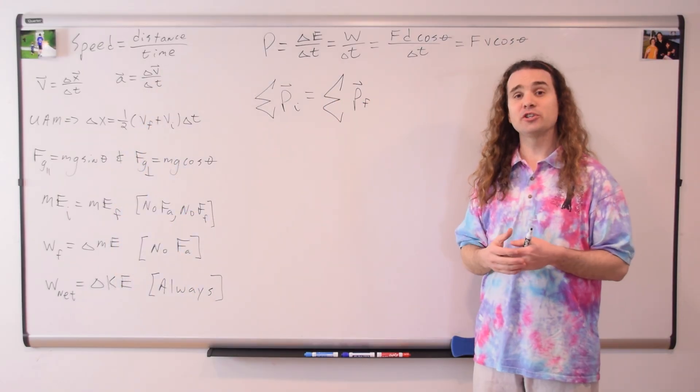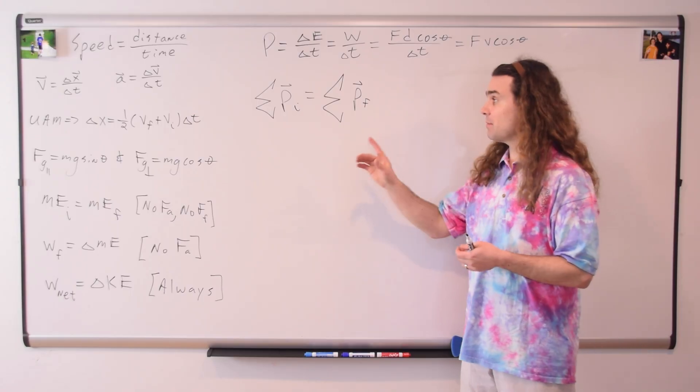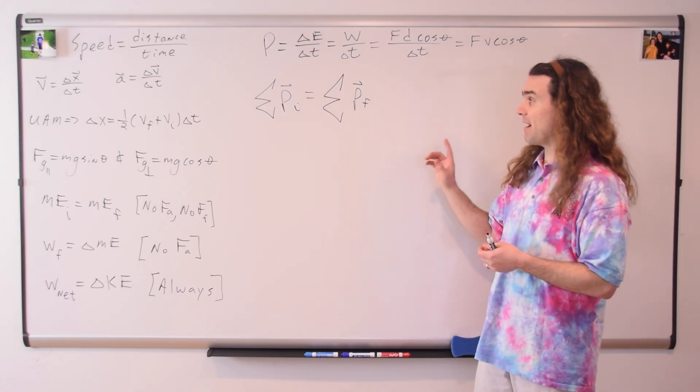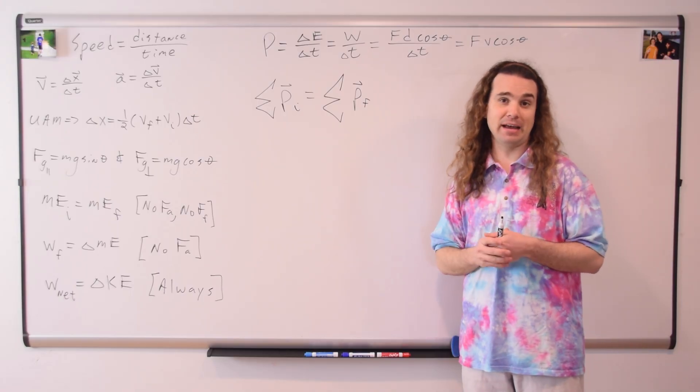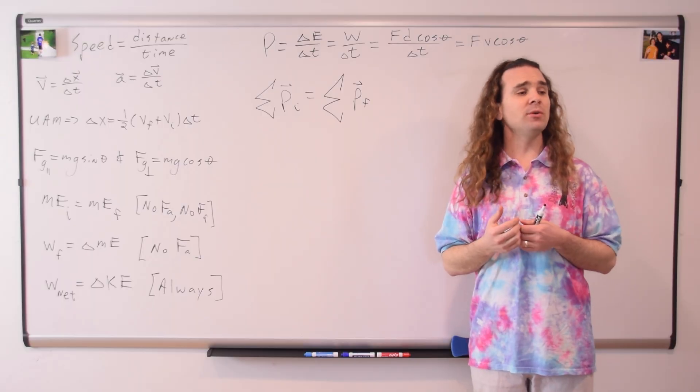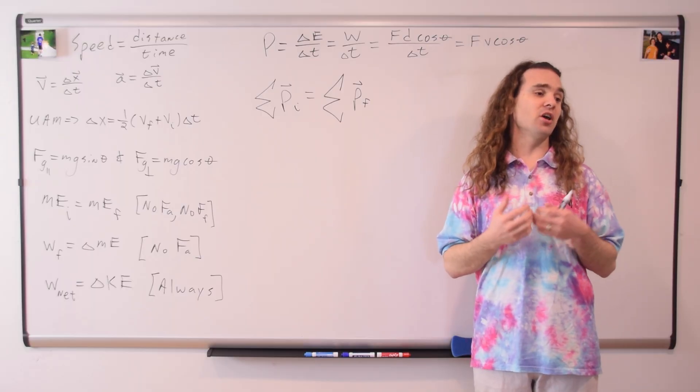Conservation of linear momentum: the sum of the initial momentums equals the sum of the final momentums, where momentum is a vector. When can we use conservation of linear momentum? We can use it when the net force acting on the system is zero, which is during all collisions and explosions.